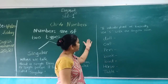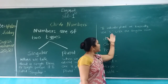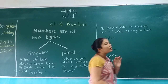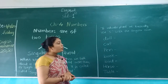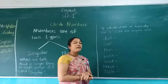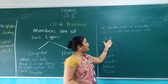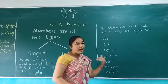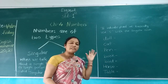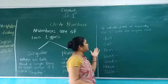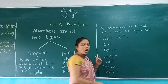To indicate plural, we basically use S with the singular noun. When we have to make a plural, we add S. For example: D-O-L-L, Doll. To make this plural form, I will add S. D-O-L-L-S, Dolls.